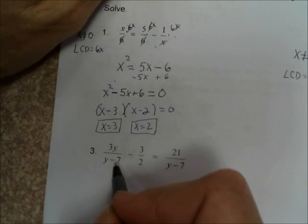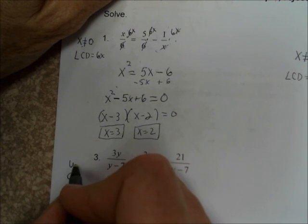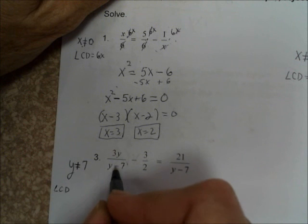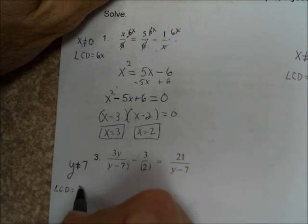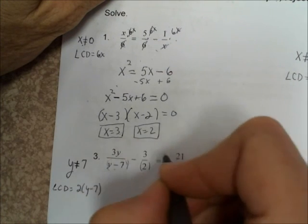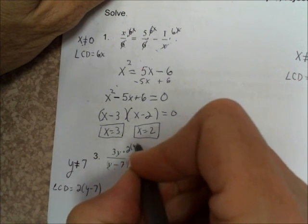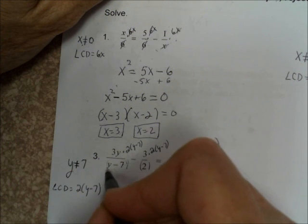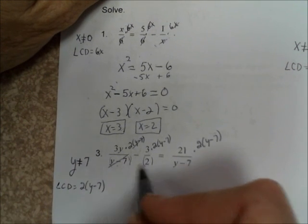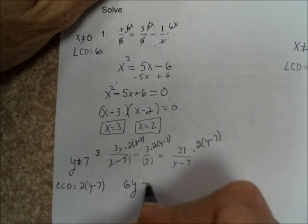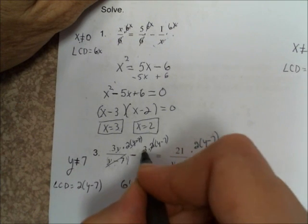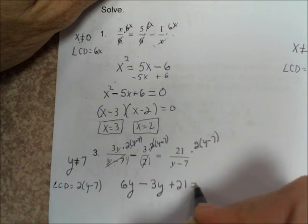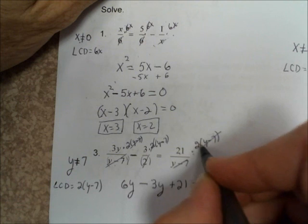Number 3. What value of y would make this go to 0? Well, y minus 7 — if y equals 7, it would make this go to 0, so y can't be equal to 7. The LCD is y minus 7 times 2. Put that LCD next to every single fraction. The y minus 7s cancel, and you're left with 3 times y times 2, which is 6y, minus those 2s cancel, giving negative 3 times y which is negative 3y, and negative 3 times negative 7 is positive 21. Then these y minus 7s cancel and 21 times 2 is 42.